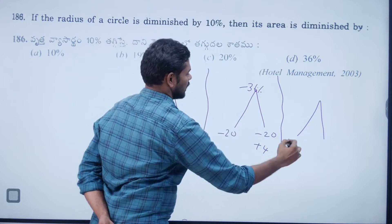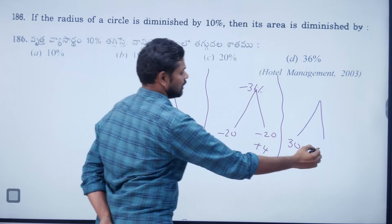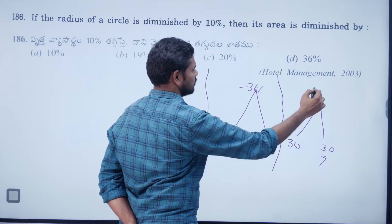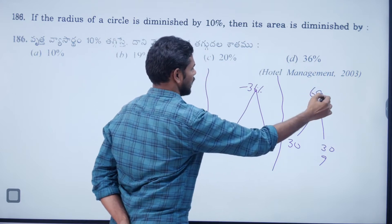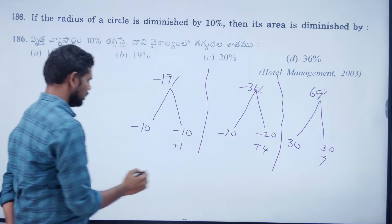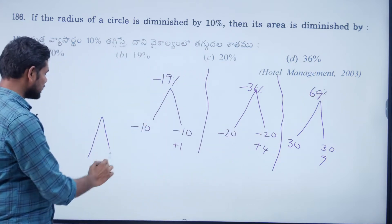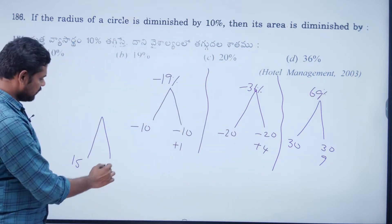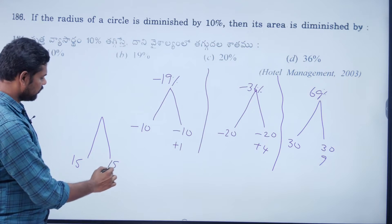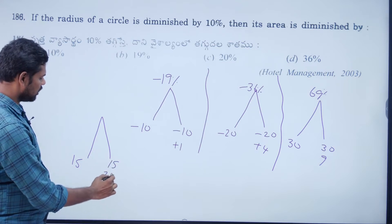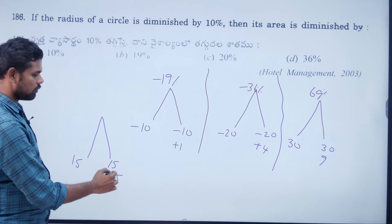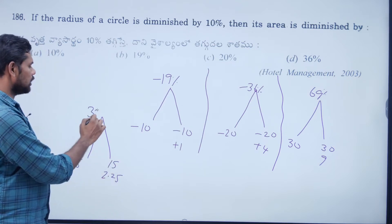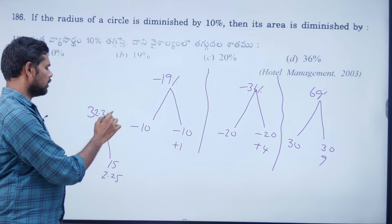If radius increases by 30%: 30 + 30 + 9 = 69%. If radius increases by 15%: 15 + 15 + 2.25 = 32.25%. So for any percentage change question on area, since area is directly proportional to r², we apply two successive percentage operations.